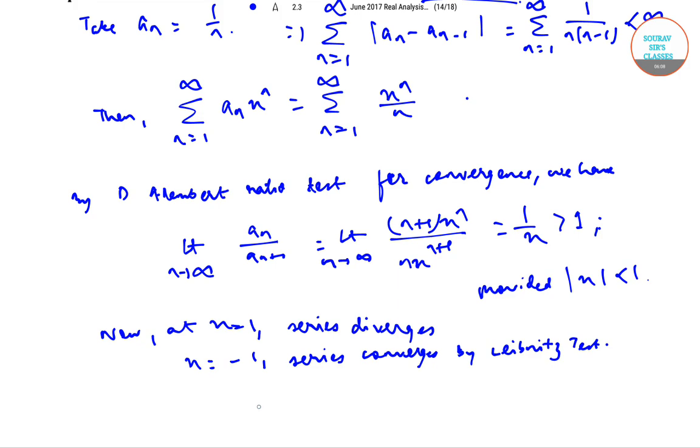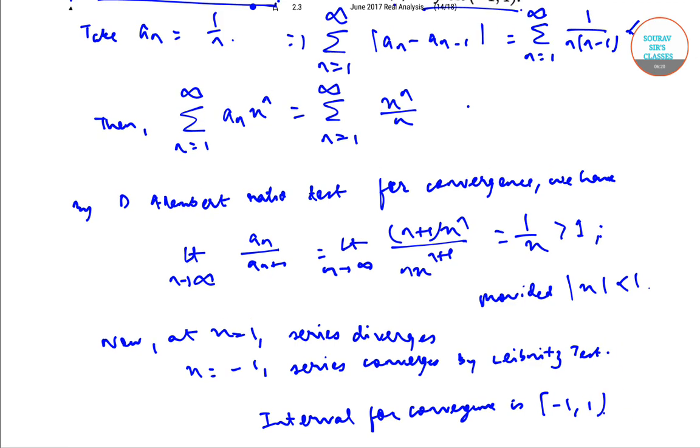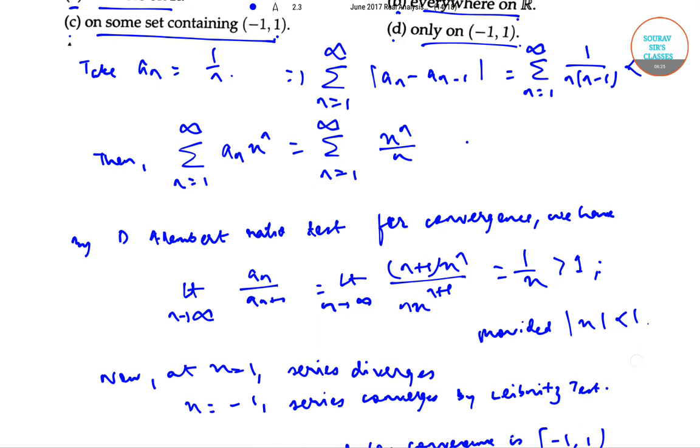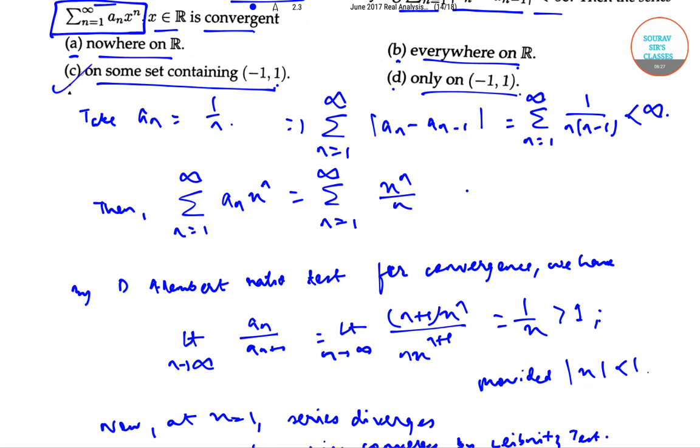So the interval for convergence is [-1, 1), where it includes -1 but does not include +1, so option C is the correct answer. Thank you.